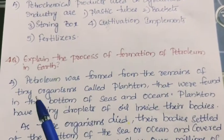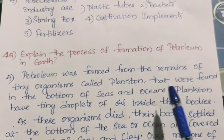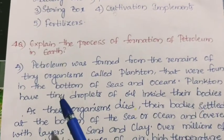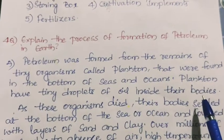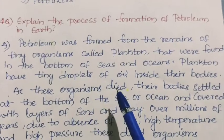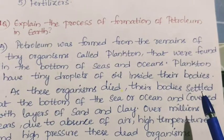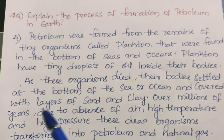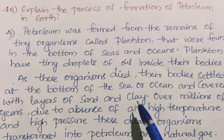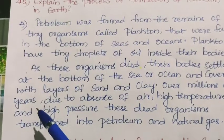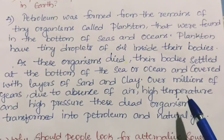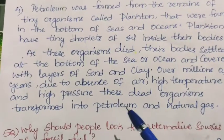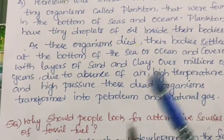Fourth question: explain the process of formation of petroleum in earth. Petroleum was formed from the remains of tiny organisms called plankton found at the bottom of seas and oceans. Plankton have tiny droplets of oil inside their bodies. As these organisms died, their bodies settled at the bottom of the sea or ocean and were covered with layers of sand and clay. Over millions of years, due to absence of air, high temperature, and high pressure, these dead organisms transformed into petroleum and natural gas.